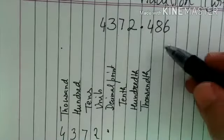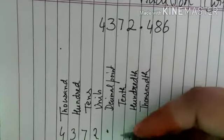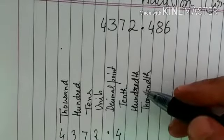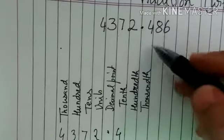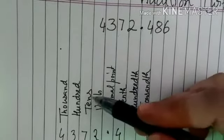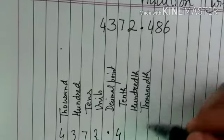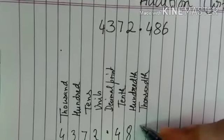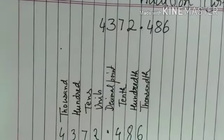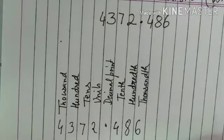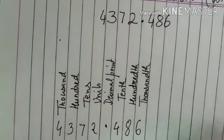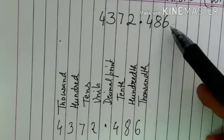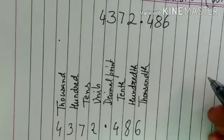The numbers just after the decimal: 4 comes under the tenths place, meaning the one-tenth place. So this number's position is the one-tenth place. Then 8 comes under the hundredths place and 6 comes under the thousandths place and so on. So now it is clear about the place value of decimals — the first decimal digit is tenths, the second is hundredths, and so on.